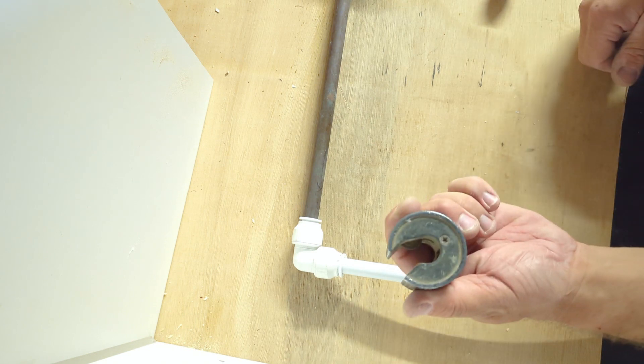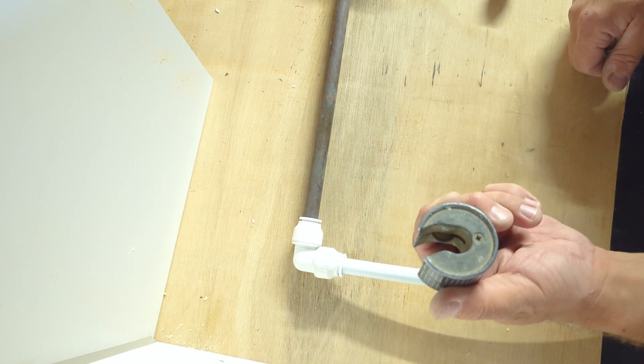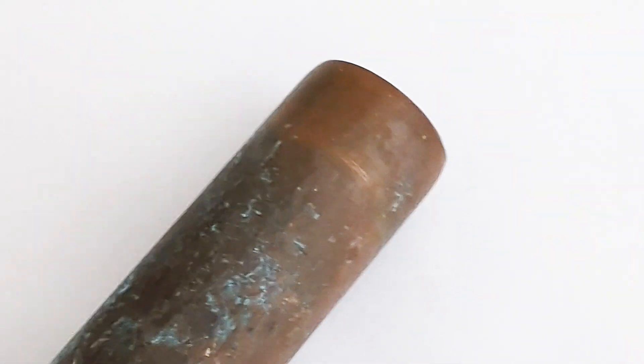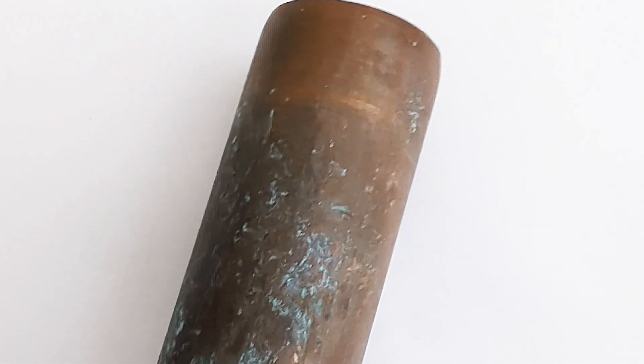I highly recommend using a pipe slice as shown here. What this will do as it cuts the pipe is create a bevel around the edge of the pipe, which is great because these push fittings have a rubber O-ring inside them.